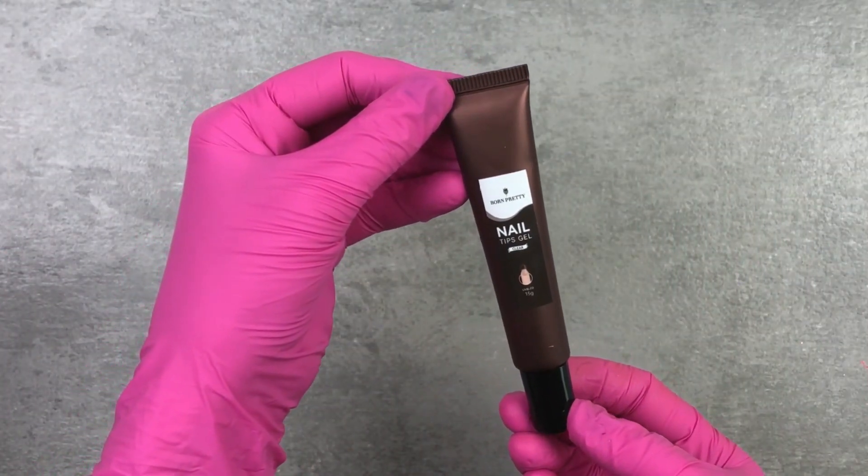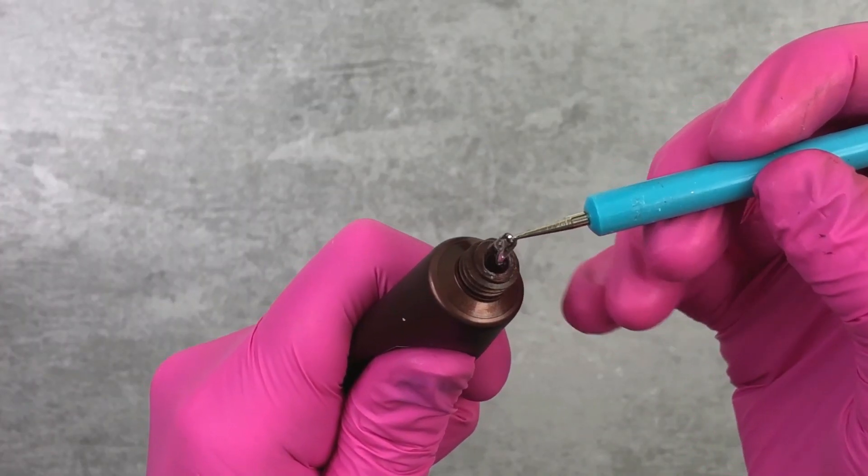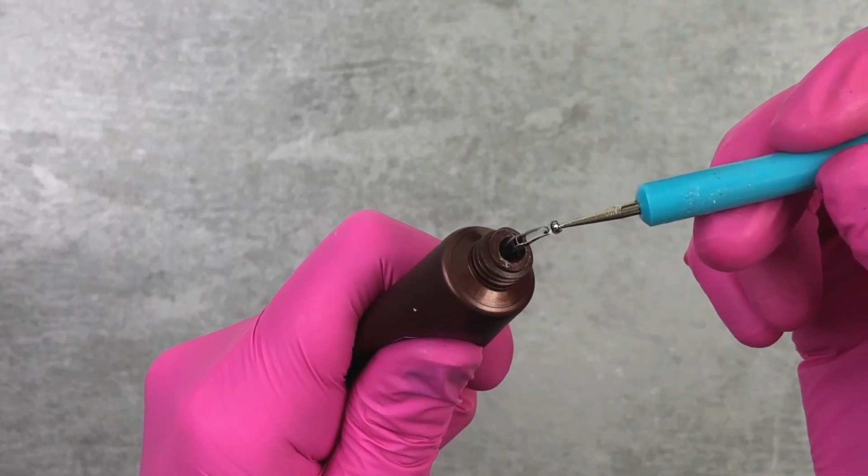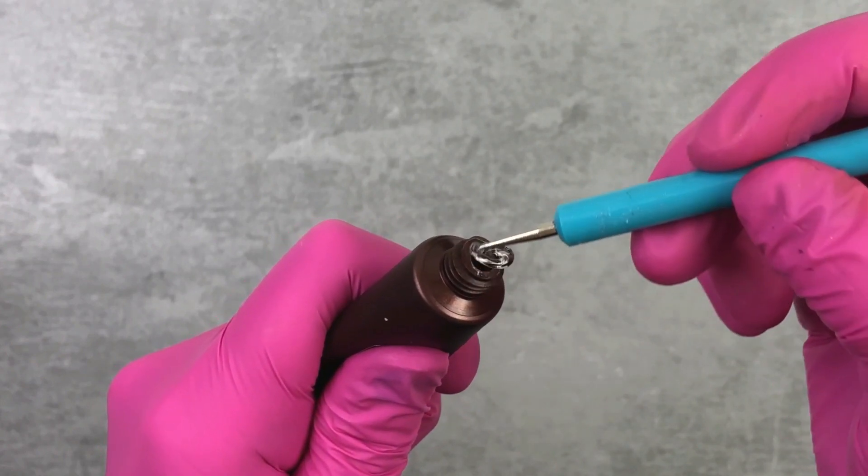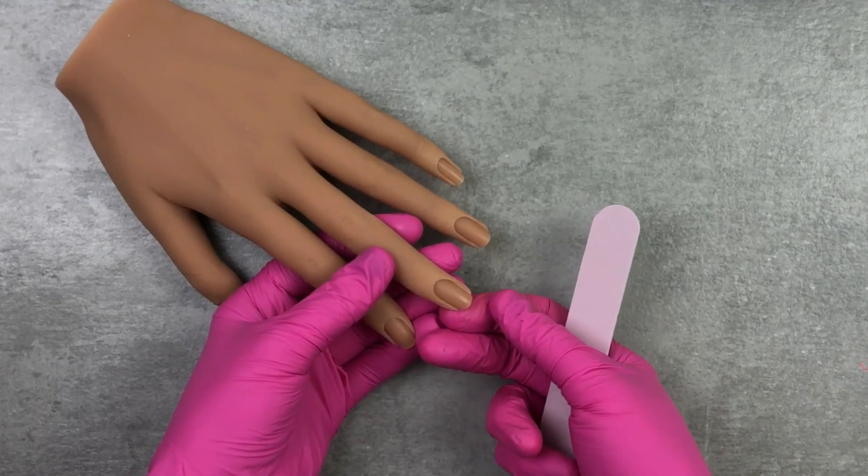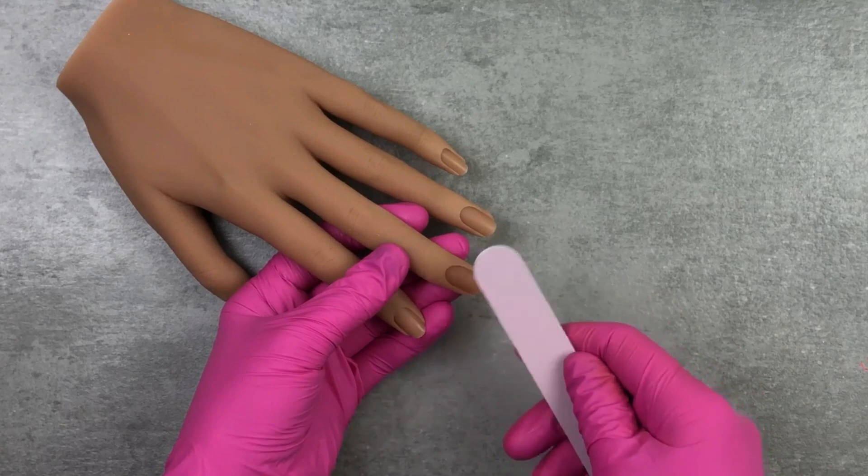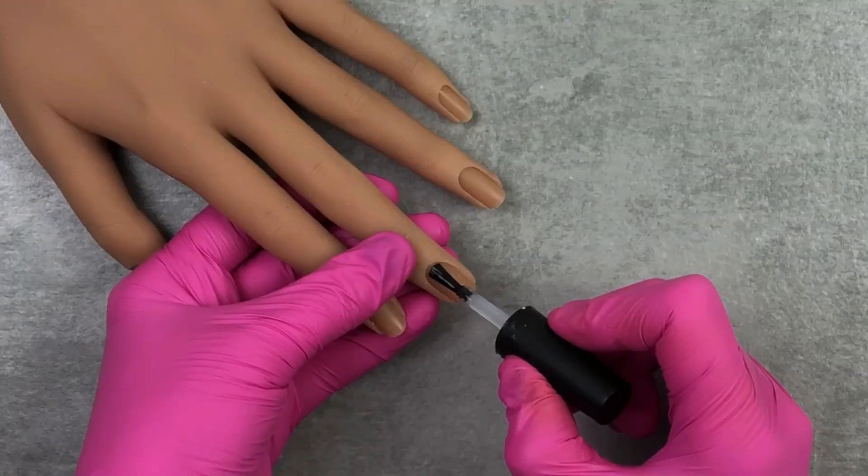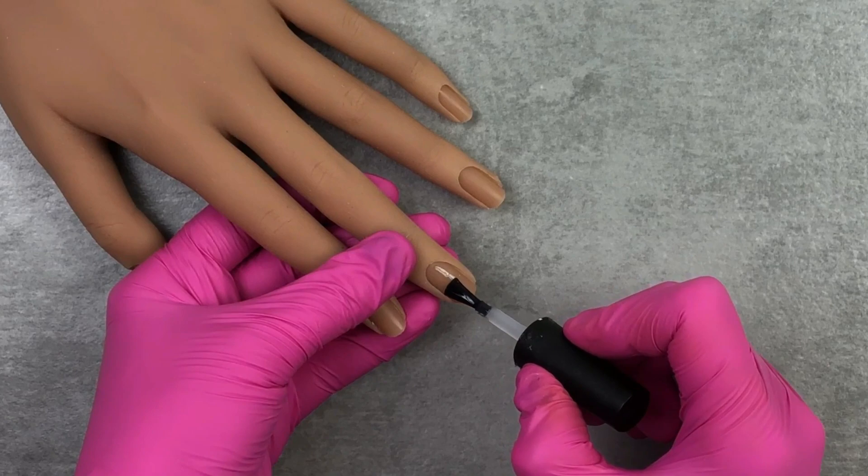Next is the Nail Tips Gel and there's a few ways that you can use this. It's quite viscous and thick, so this type of gel is great for applying a nail tip. So prep your nail by removing any shine, and by the way I'm not actually doing this to the practice hand. Then apply a base coat.